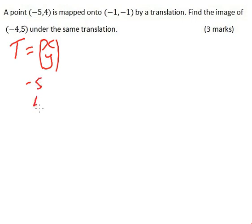So we write our point in column form, (-5, 4). If you add the translation vector (x, y), it should give you or map that point to (-1, -1).